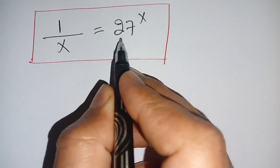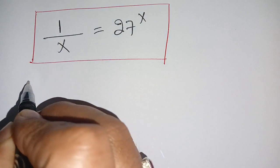How to solve 1 divided by x is equal to 27 power x. Let us solve this.